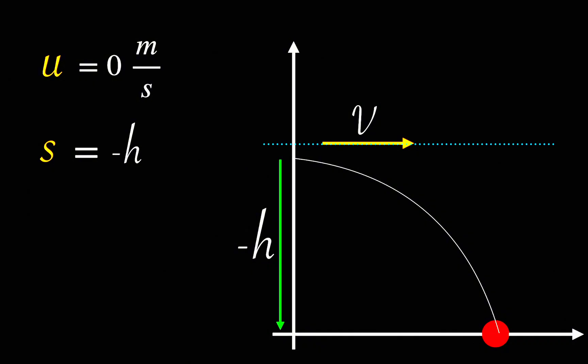Now, let's use the equation of motion s equals ut plus one half at square. Here, s is the vertical displacement and u is the initial vertical velocity.